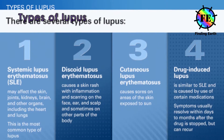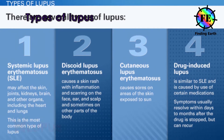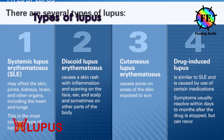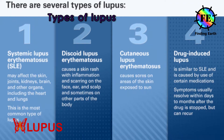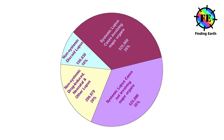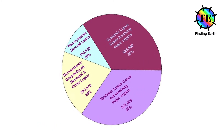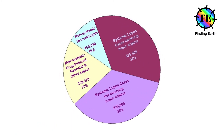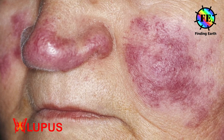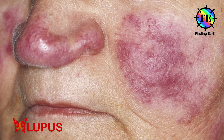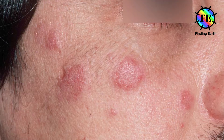Several different kinds of lupus have been identified, but the most well-known type is systemic lupus erythematosus, or SLE. Other types include discoid, drug-induced and neonatal.